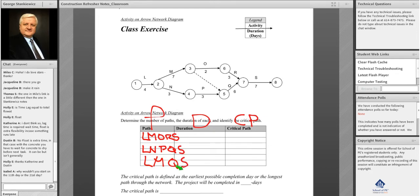That's our first thing. We list all the paths and there's three. Next, what we're going to do is count the duration of each of the paths. Four plus seven plus two plus three plus seven is equal to 23 days.